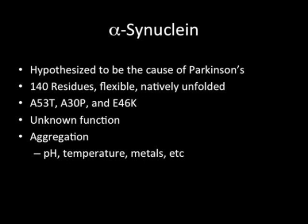Alpha-synuclein, which is an IDP, is hypothesized to be the cause of Parkinson's. It is characterized by 140 residues and is flexible and natively unfolded. There are three mutants associated with Parkinson's: A53T, A30P, and E46K. For A53T, alanine on the 53rd residue is replaced with threonine. The function of alpha-synuclein is unknown, and factors that contribute to its aggregation include changes in pH, temperature, and metals, with aggregation usually occurring at a lower pH.